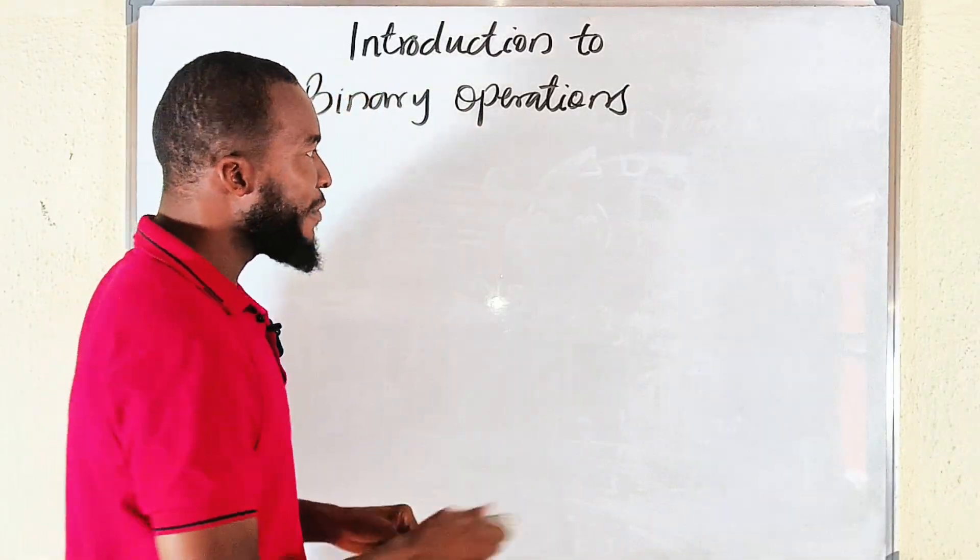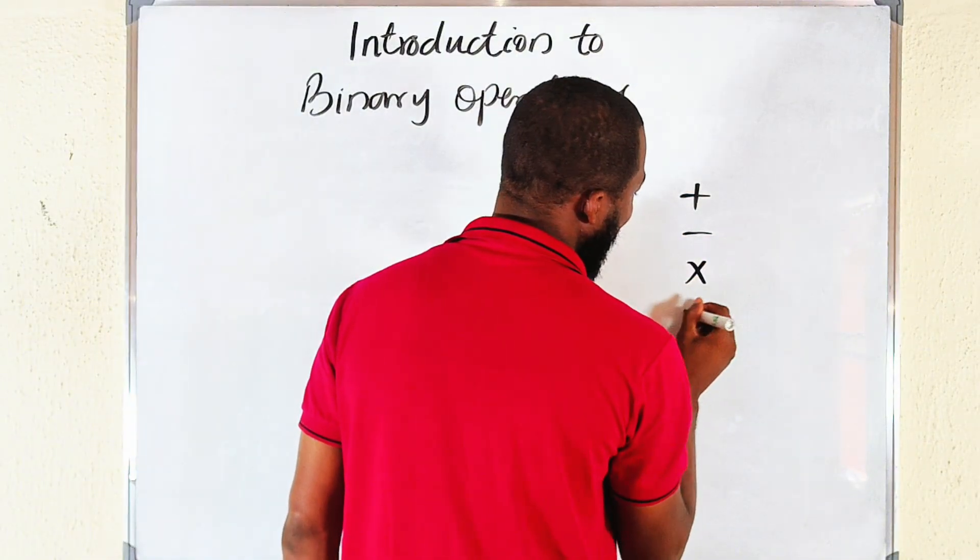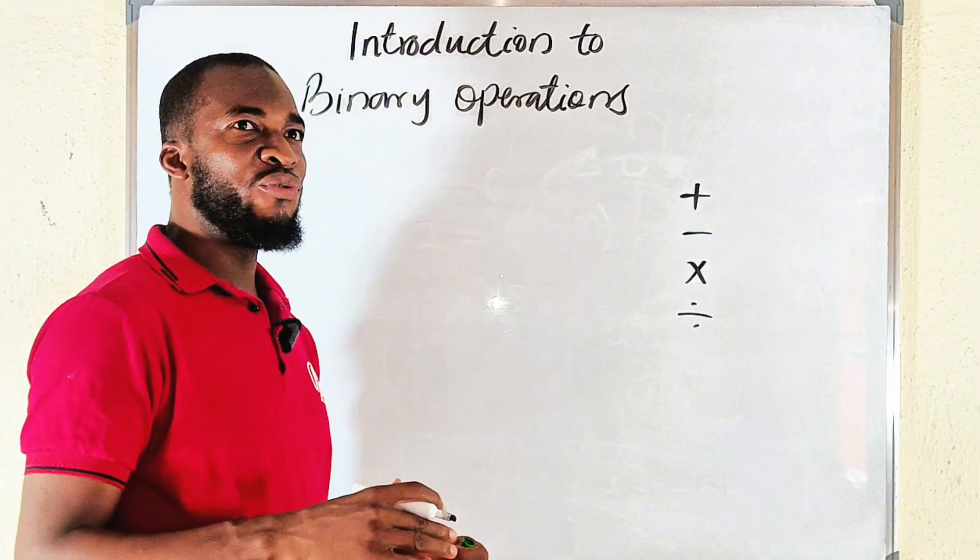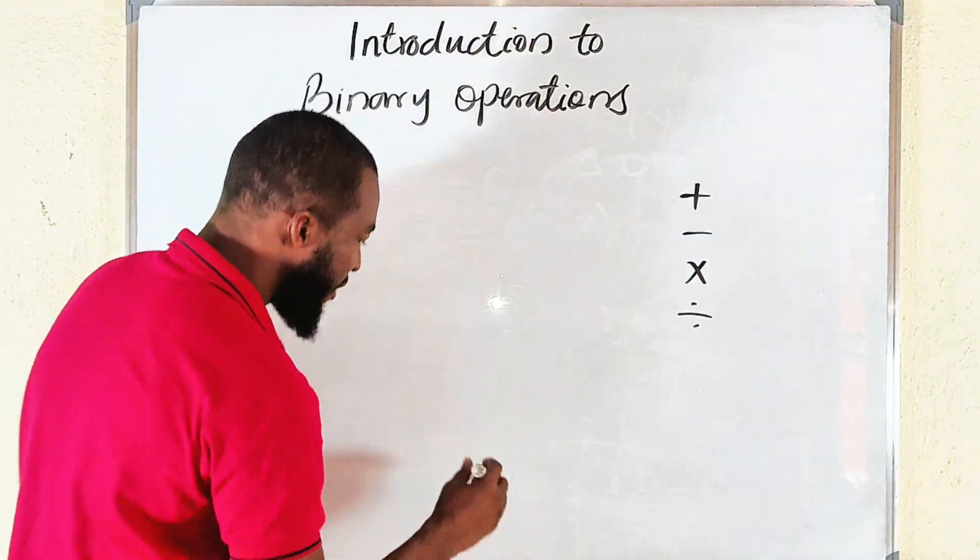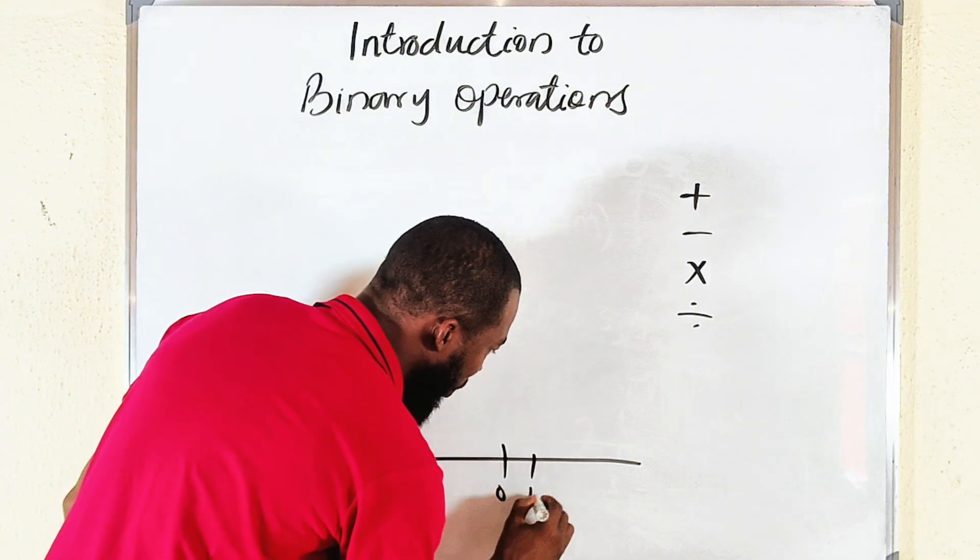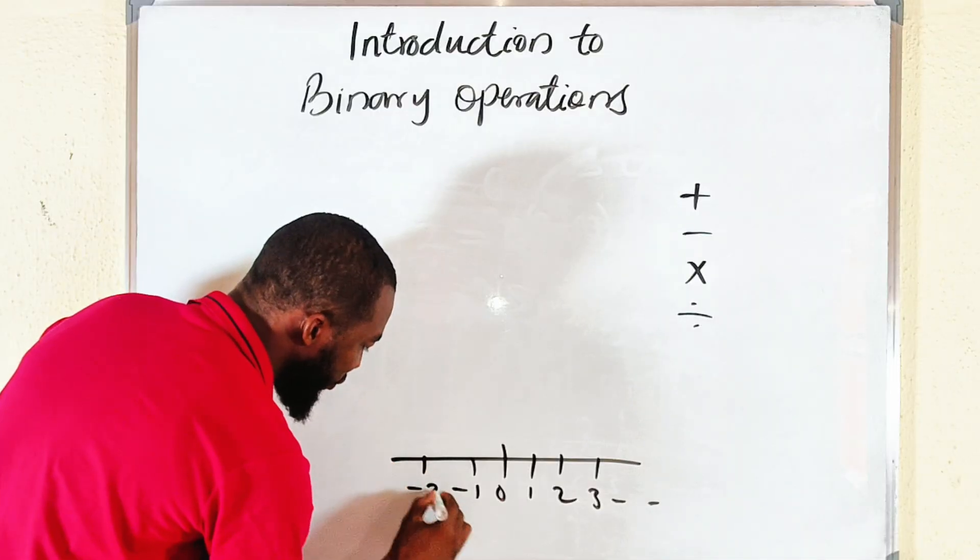Before we come back to this binary operation, let us talk about the four basic operations we have in mathematics: we have the plus, we have the minus, we have the times, and division. Let's start with integers. Integers are numbers on the number line: one, two, three and so on. If you come to the left, you have negative one, negative two, and negative three and so on.